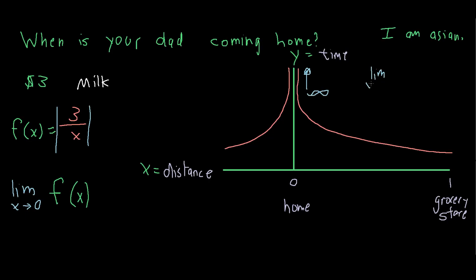The limit as x approaches 0, in respect to the equation of the absolute value of 3 over x, is infinity.